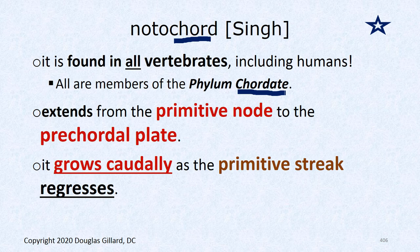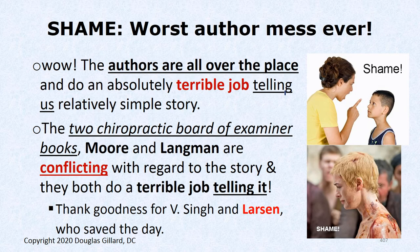The notochord extends from the primitive node to the pre-chordal plate. It initially grows caudal to cranial until it bumps into the pre-chordal plate. Then as the primitive streak starts regressing backward, it spits cells out forward so the notochord elongates in that direction. I have to go on a rant here — I don't know how many days I spent putting this story together, reading so many books. The authors are all over the place. Two chiropractic textbooks — Moore's and Langman's — conflict with each other. Schoenwolf and Larson were in harmony and very good at telling this story.